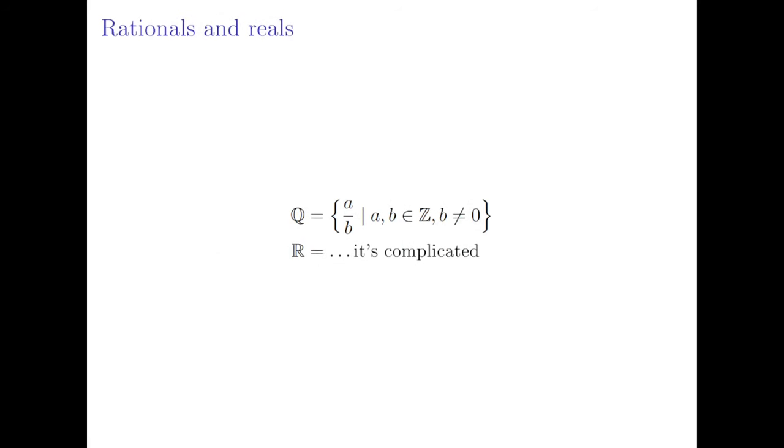Now we can extend these to get to the rational numbers, and these are all of our fractions. So all the numbers a over b such that a and b are in the integers and b is not equal to zero, because of course we can't have division by zero.